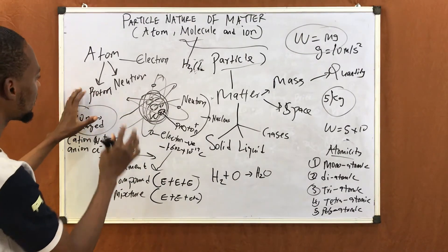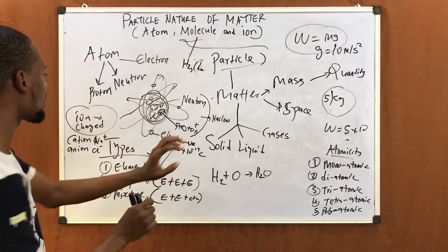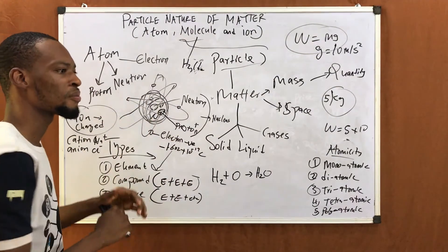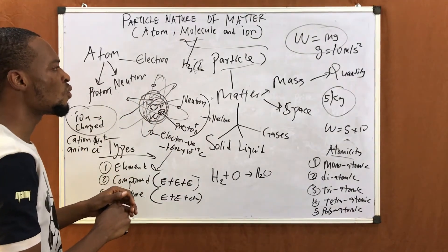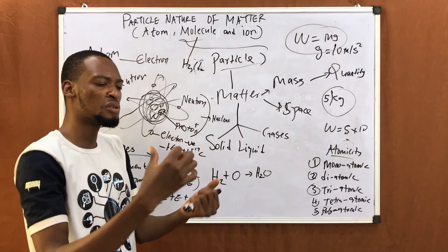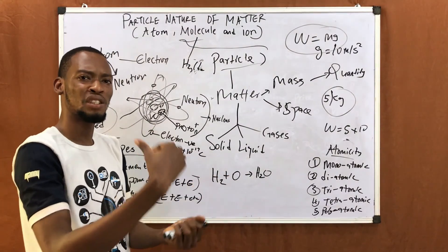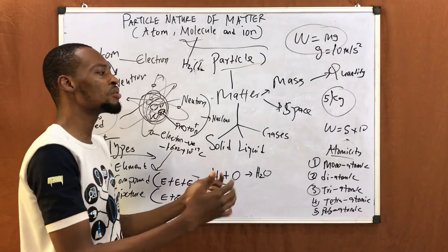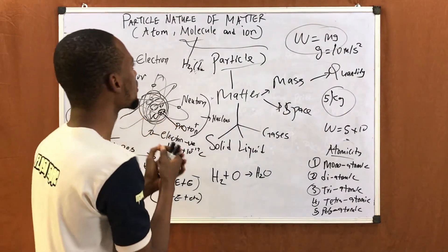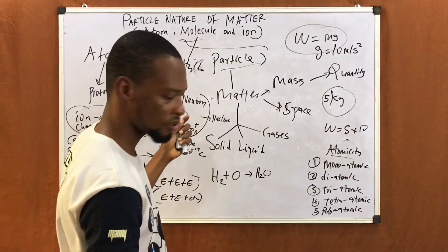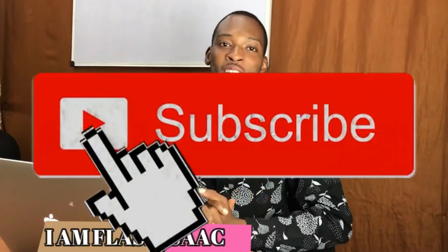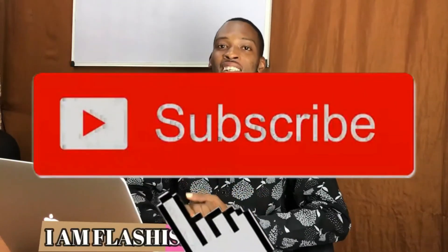So that is it on the particle nature of matter: atom, molecule and ion, and the subatomic particles — electron, proton, neutron — and atomicity. This is to introduce you to chemistry. With every passing lecture, I will be going deeper and deeper until we get to the roots. Hope you understand this introduction — let me know if you have questions or contributions. Thank you for watching, and subscribe to this channel for more amazing videos like this.